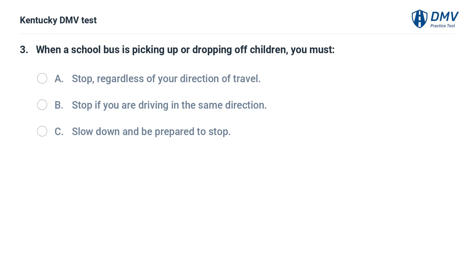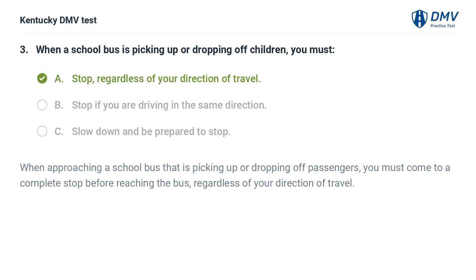When a school bus is picking up or dropping off children, you must: A. Stop regardless of your direction of travel. B. Stop if you are driving in the same direction. C. Slow down and be prepared to stop. When approaching a school bus that is picking up or dropping off passengers, you must come to a complete stop before reaching the bus, regardless of your direction of travel.